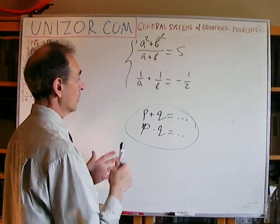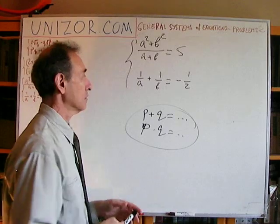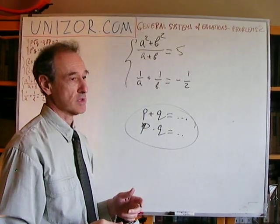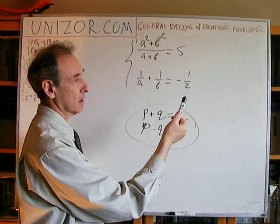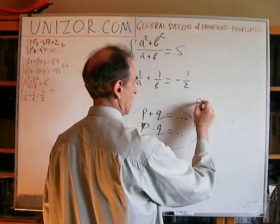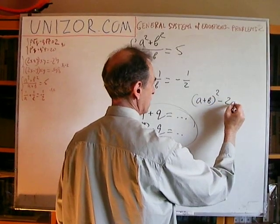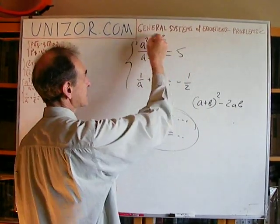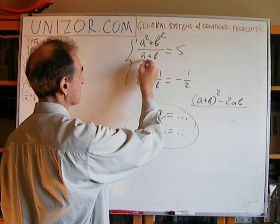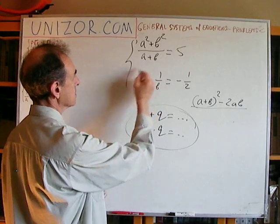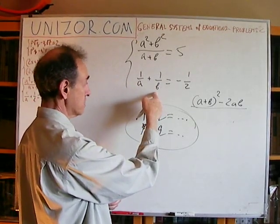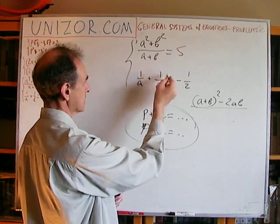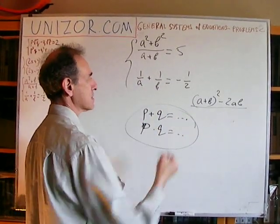Consider A-squared plus B-squared — this equals (A plus B)² minus 2AB. Also, 1/A plus 1/B, using common denominator AB, gives (A plus B) over AB. So both expressions are naturally written in terms of (A plus B) and AB. I'll let P equal A plus B and Q equal A times B. Then A-squared plus B-squared equals P-squared minus 2Q, and 1/A plus 1/B equals P over Q.